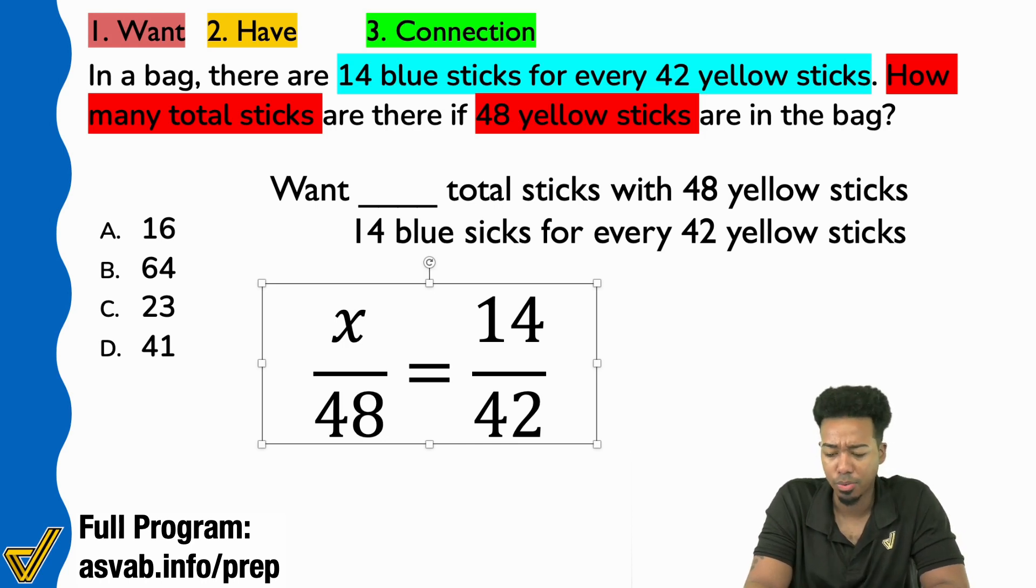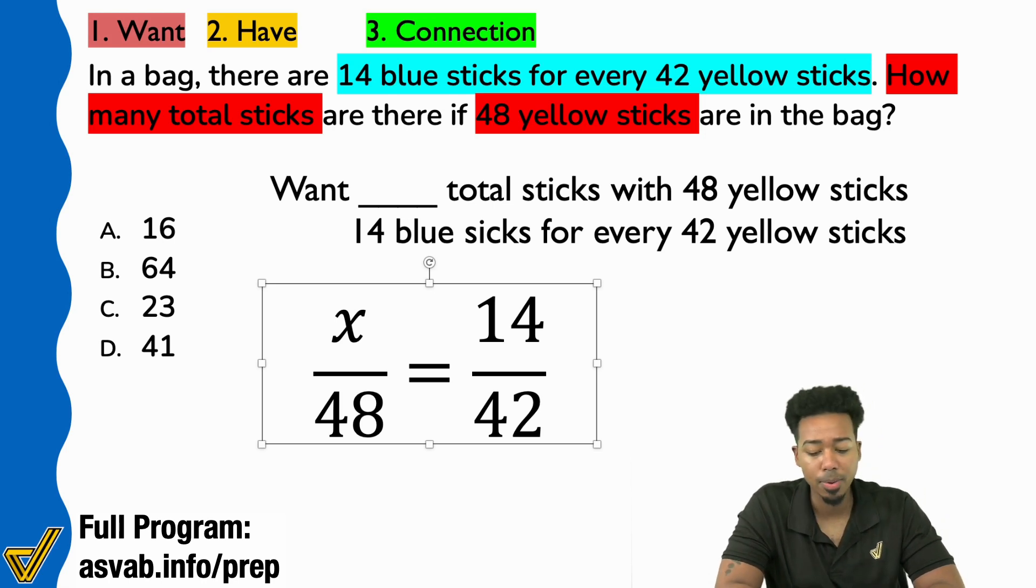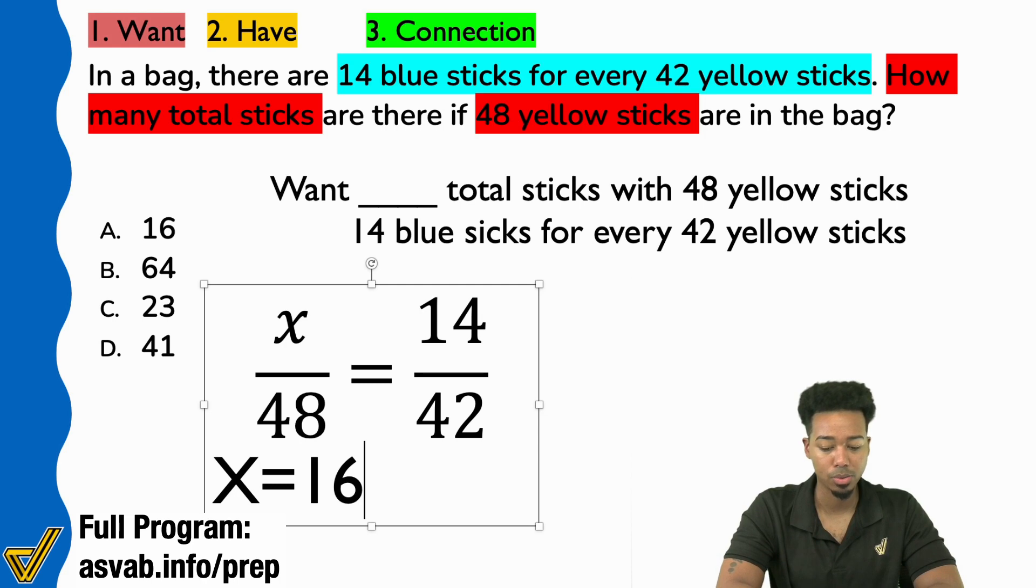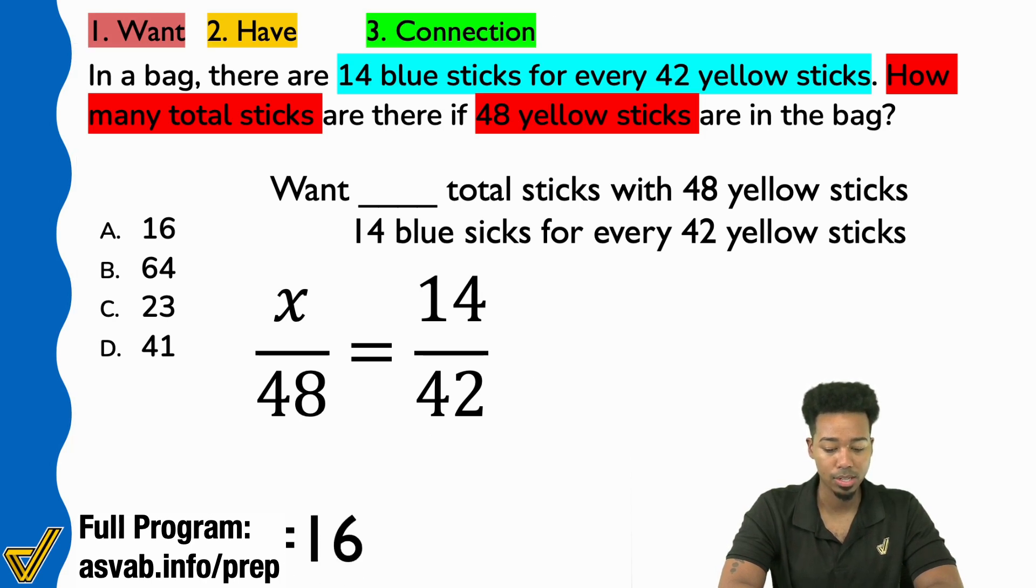Yeah, you can absolutely solve this with cross multiplication, but let me show you why you would have gotten what you've gotten. For the people that solved it this way, when you cross multiply and did the x times 42 and the 48 times 14, when you solved everything, is it true that you ended up getting x equals 16? Is it true that's what you got after it was all said and done?